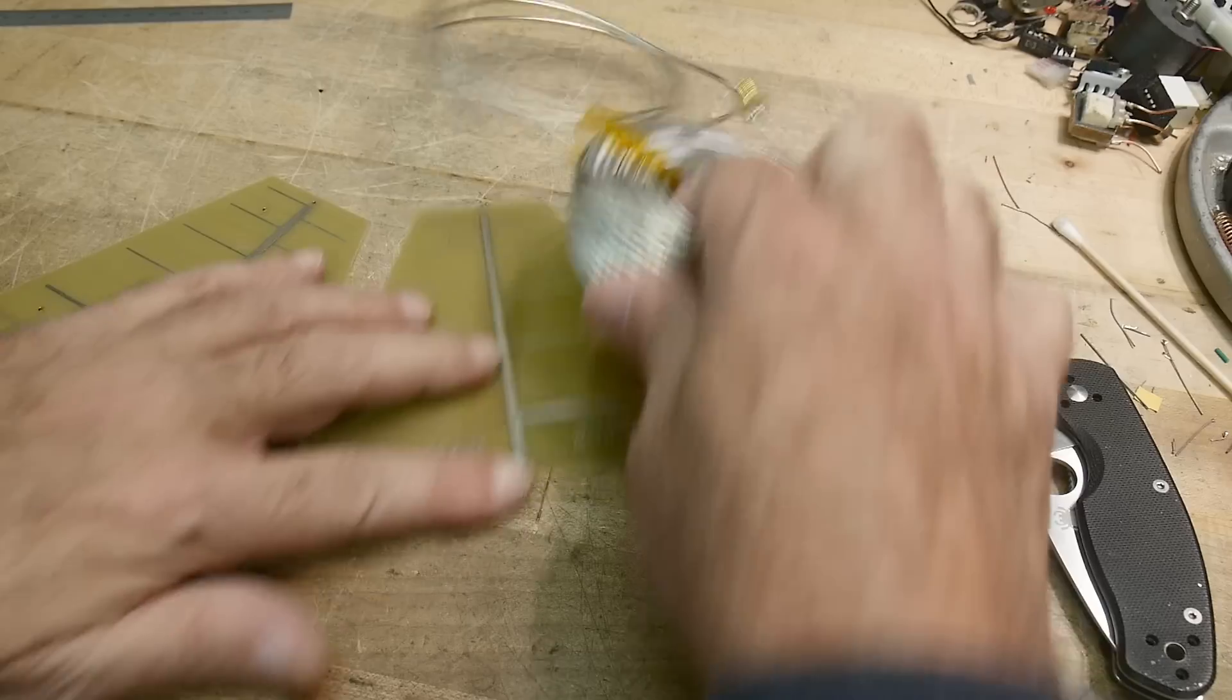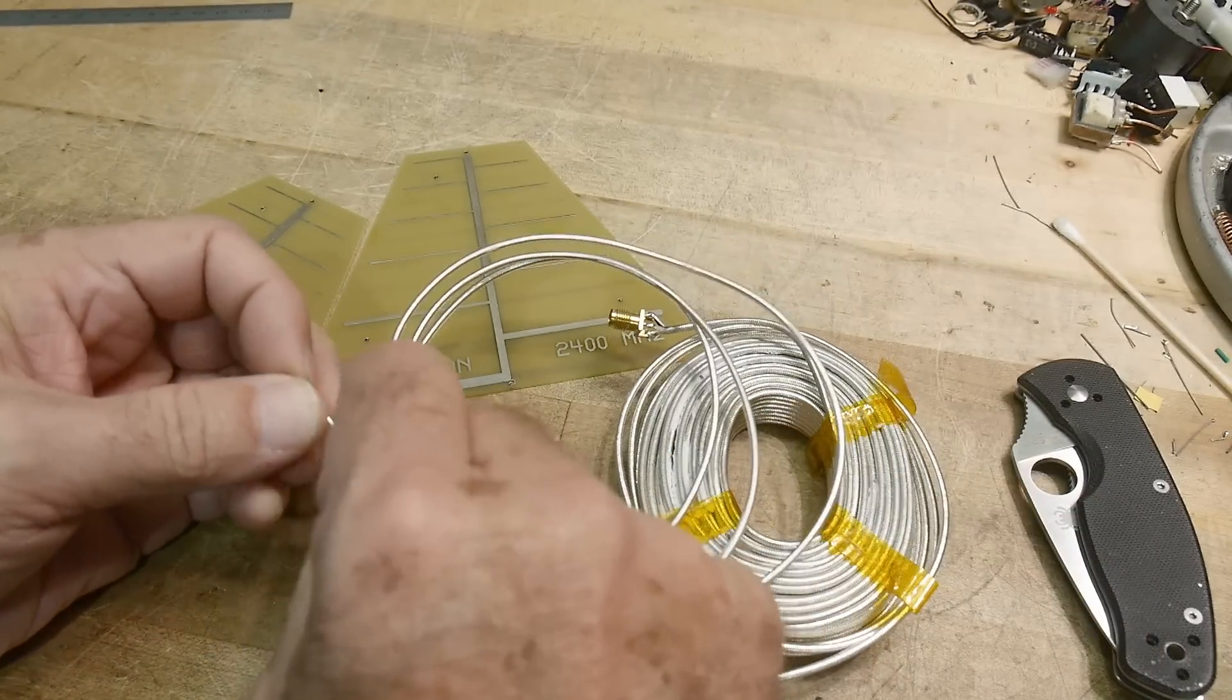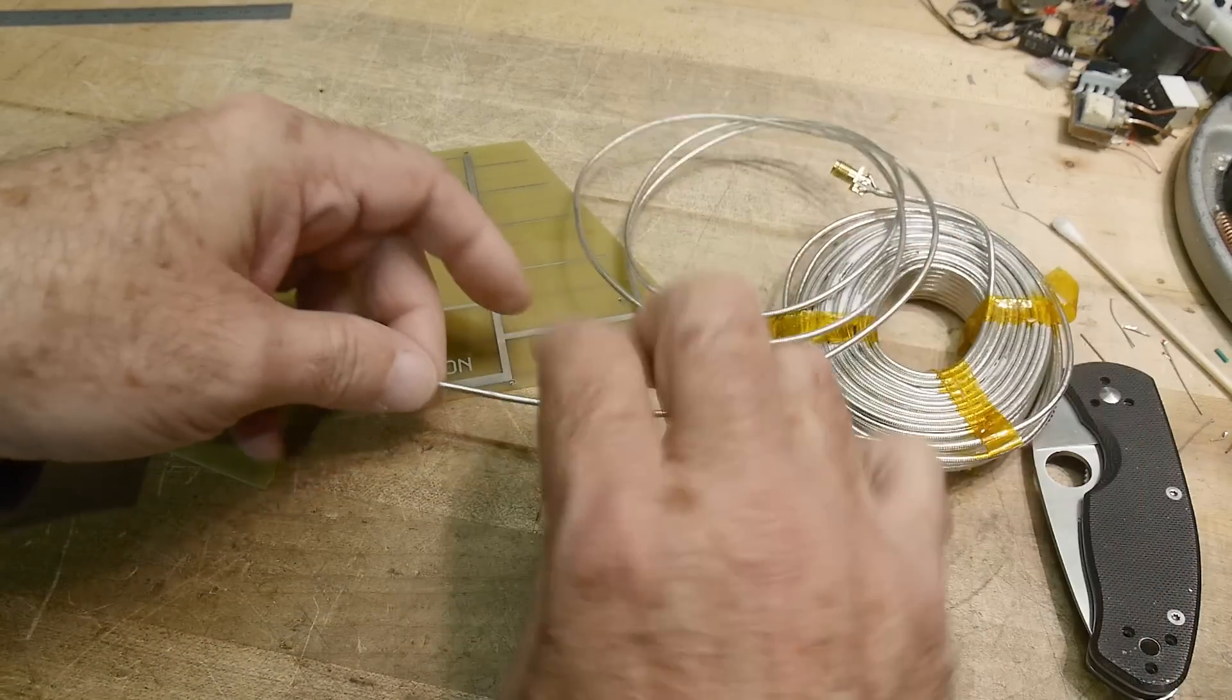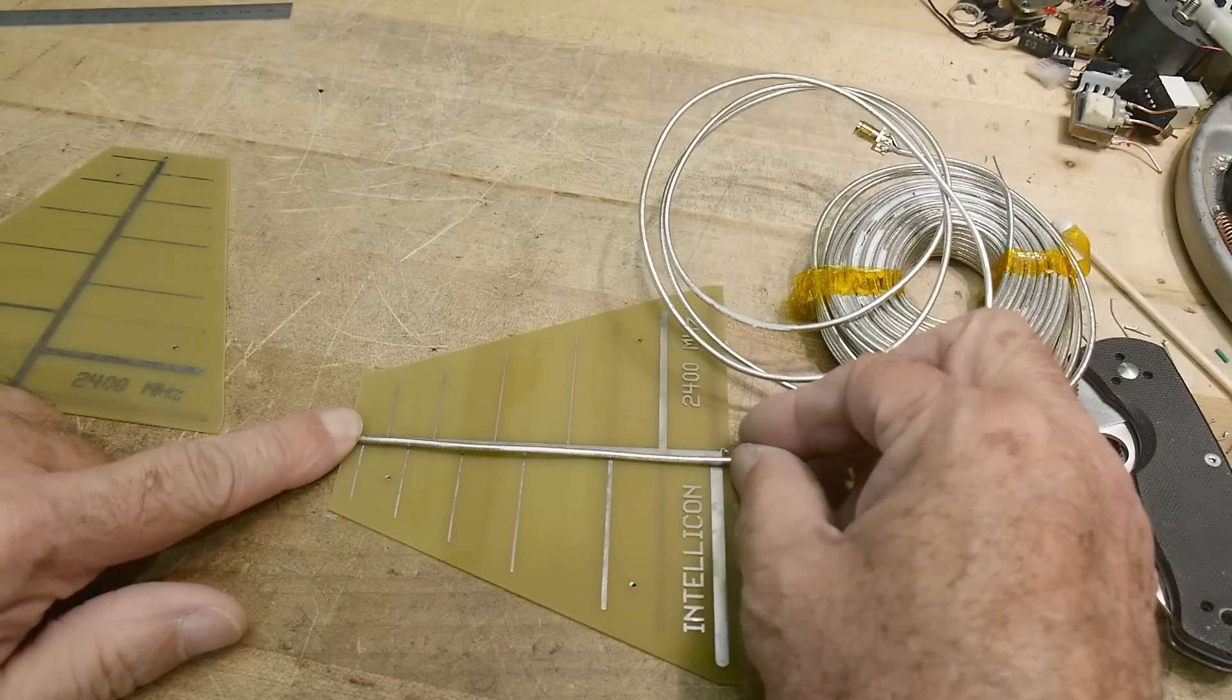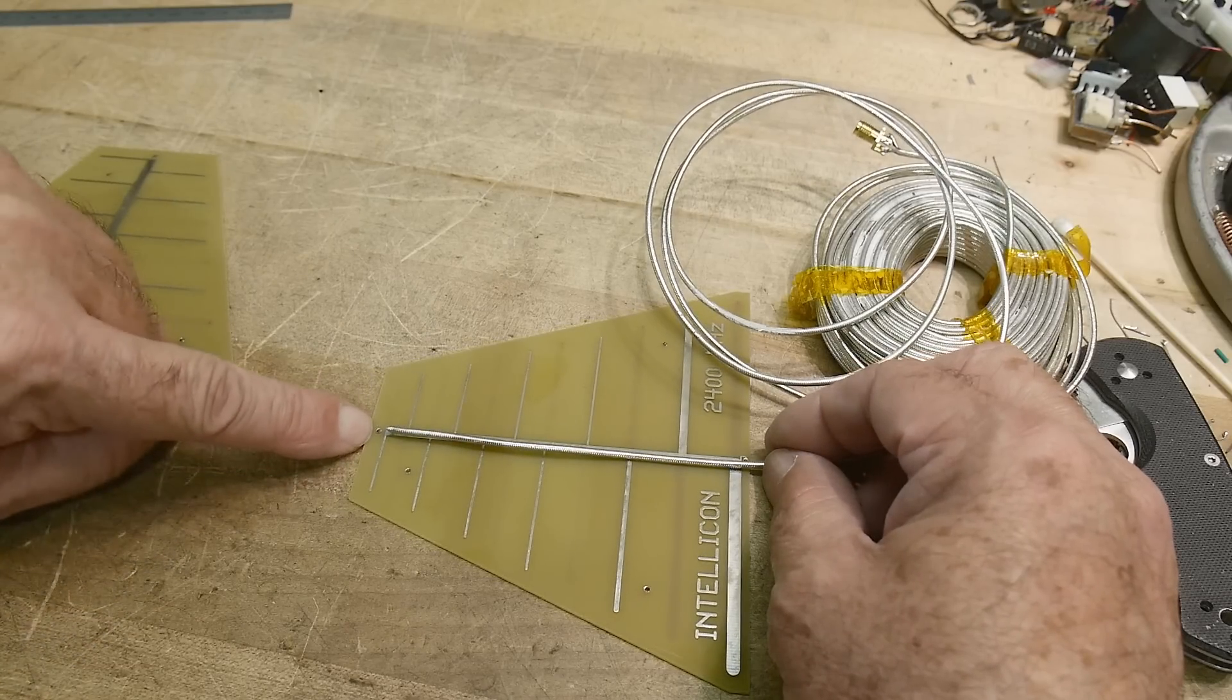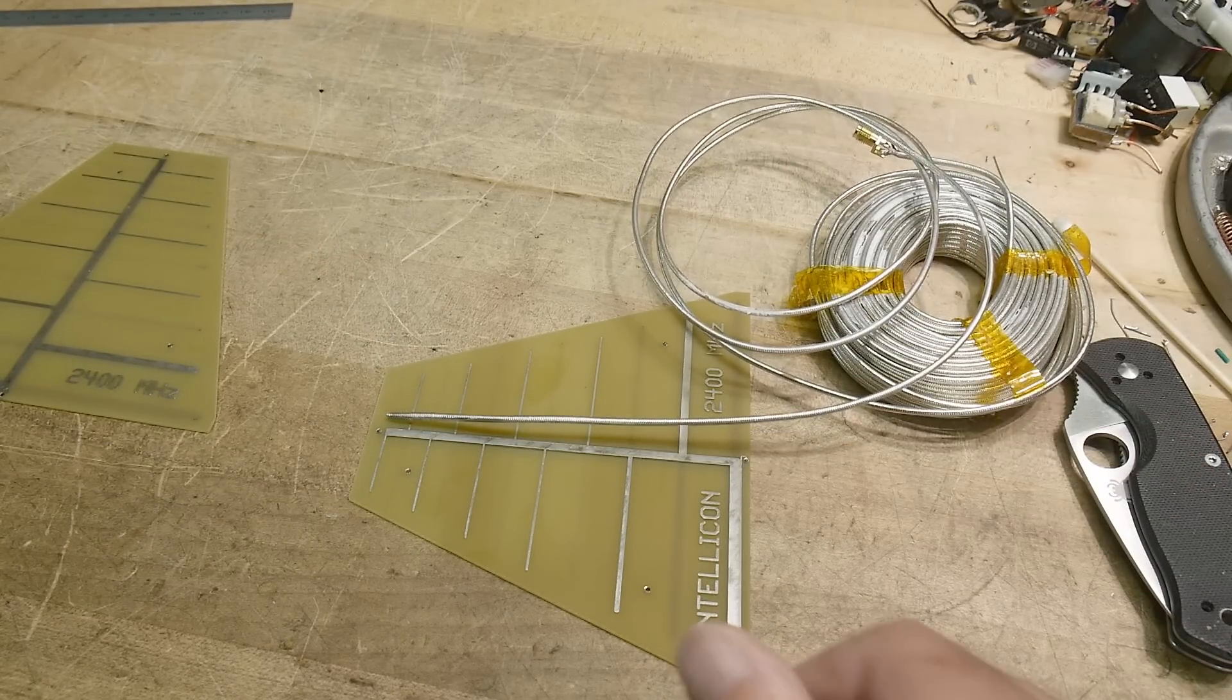All right. So I have the spool of nice expensive coax here, semi-rigid. It's silver plated, I believe. What it will do is it will lay along the ridge here and the center conductor will go into that via right there. We'll put a SMA on this side. Let's get that going.